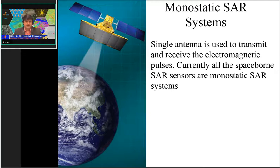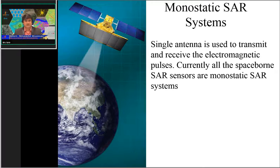In a monostatic system, there is only one antenna, and the same antenna works as both transmitter and receiver. Generally, when we talk about spaceborne remote sensing, all spaceborne SAR systems are monostatic SAR systems.